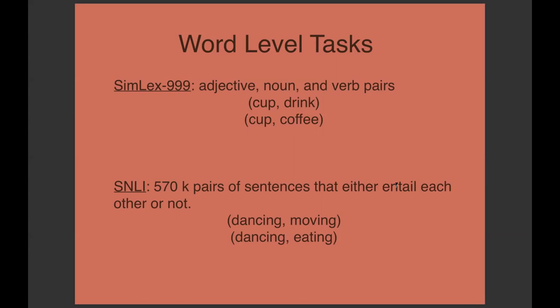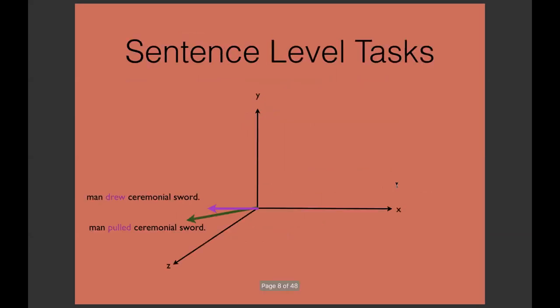There are also inference-based tasks where you have pairs of words, phrases, and sentences that entail each other, like dancing and moving, or don't entail each other like dancing and eating. Then non-symmetric measures like KL divergence are used to predict if they do. Using the vector models, again, vector models have been very successful.